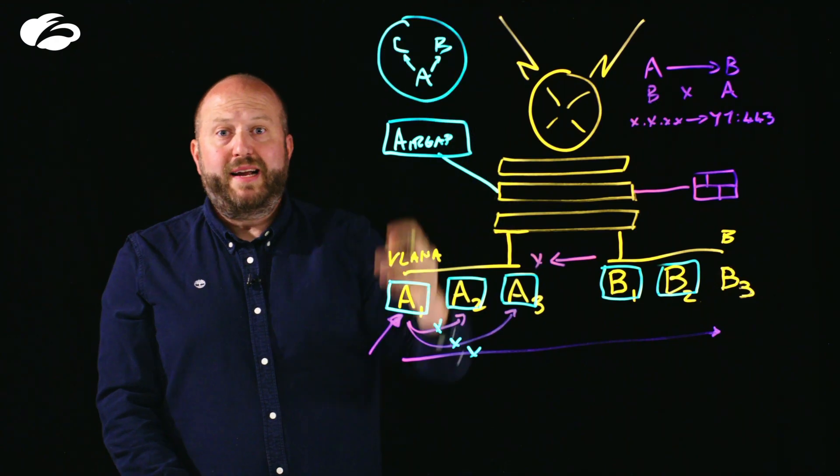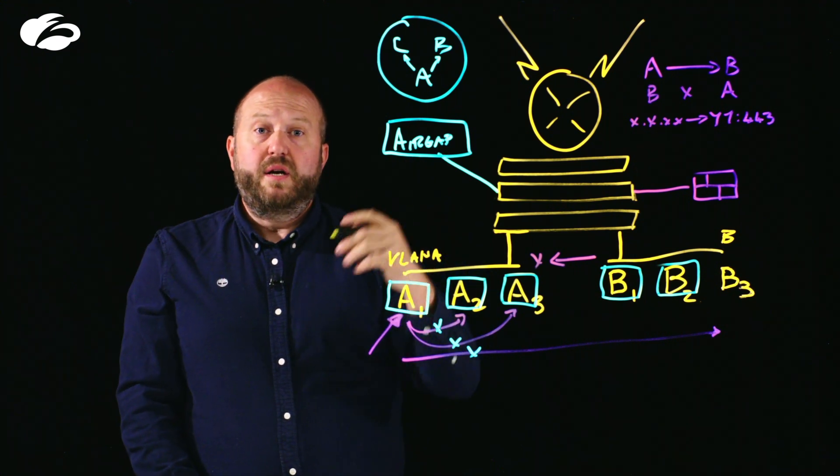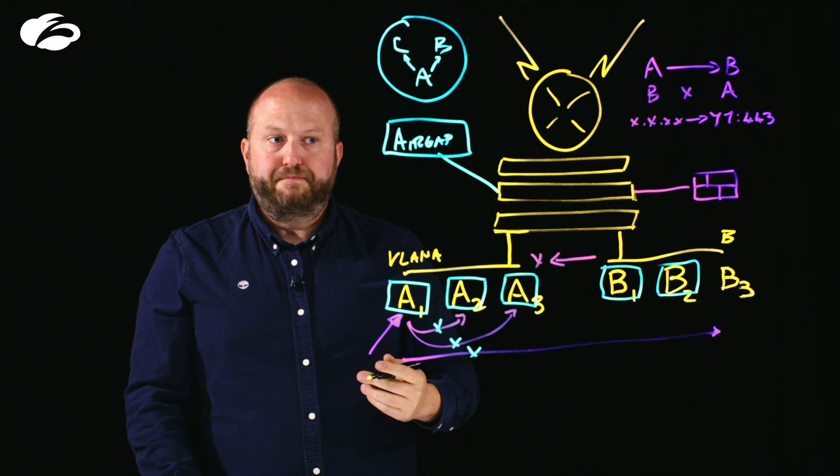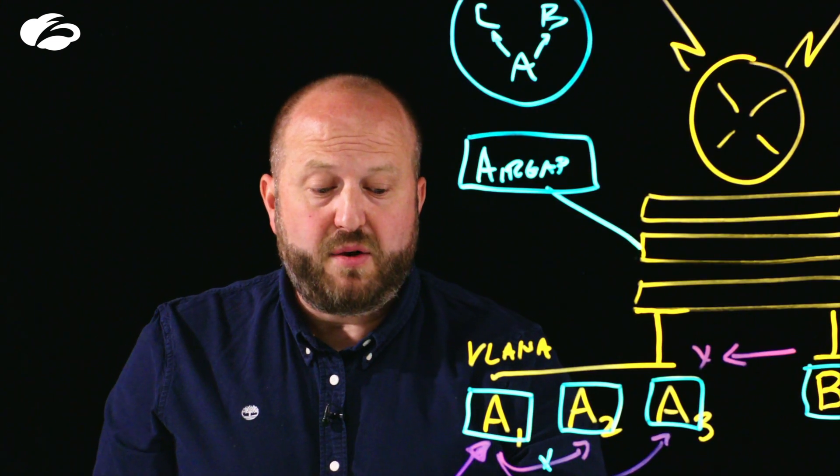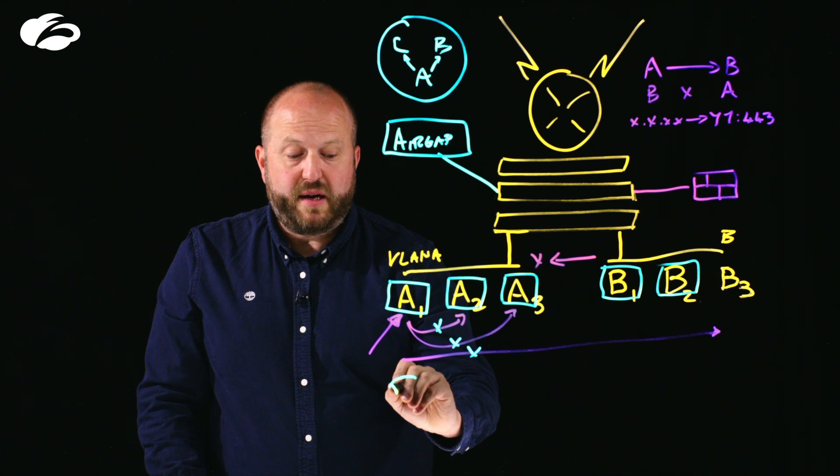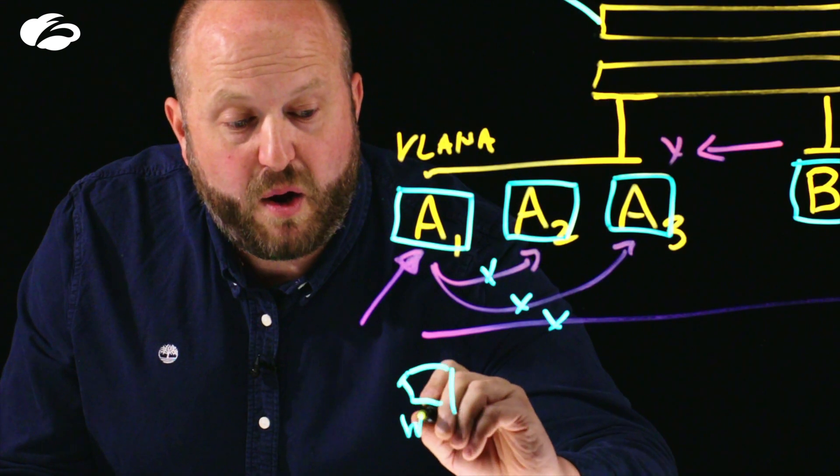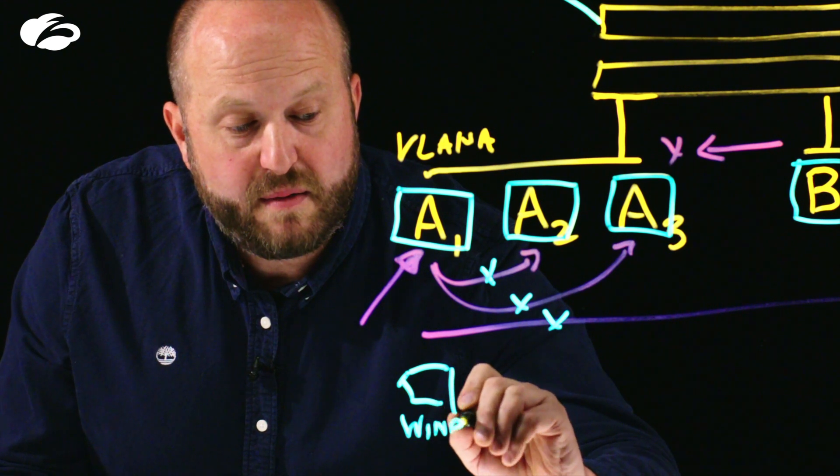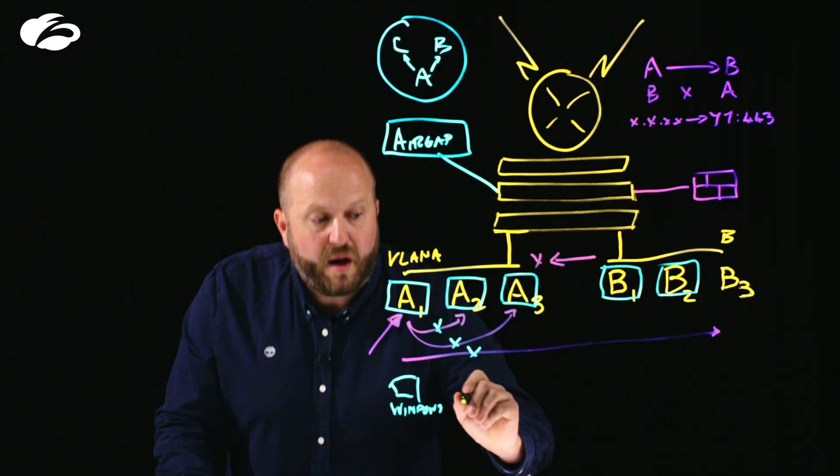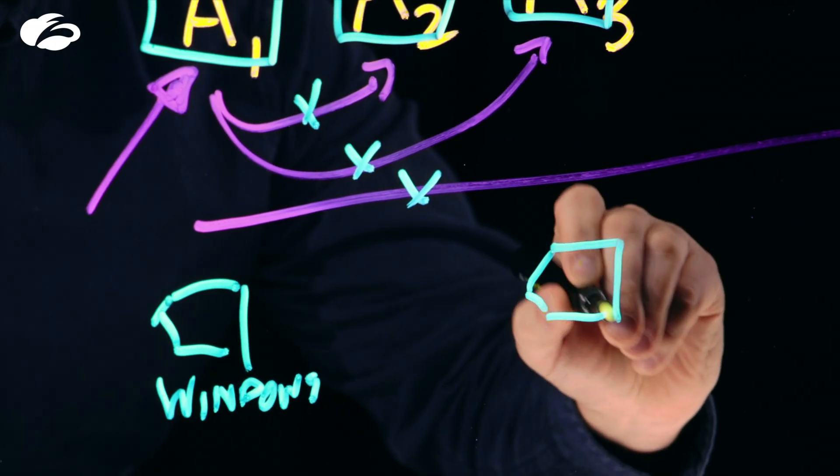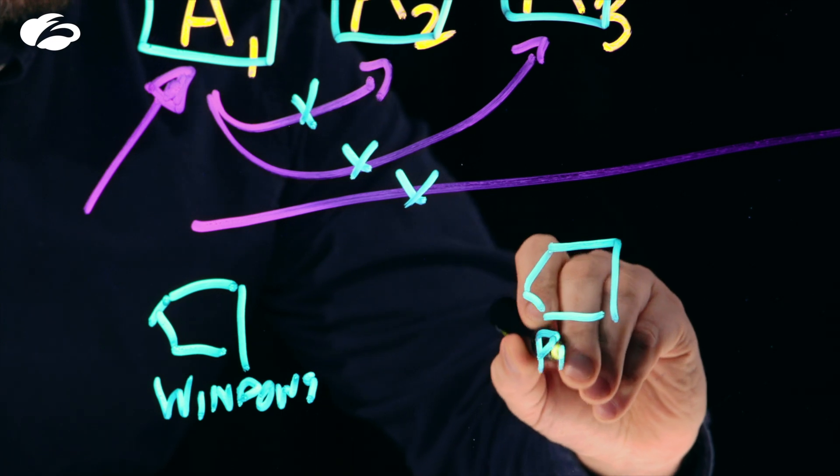This means that when you're planning out policy changes, you can understand the impact of those changes before making them. As the solution is deployed, it begins to automatically identify and tag individual assets. So for example, this may be a Windows PC. It looks at different manufacturers or can identify things like printers or other IoT devices.